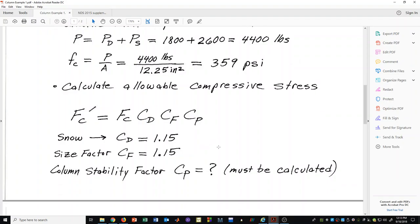In this case we just have three adjustment factors that we need to worry about. For snow we have a duration factor of 1.15. Already we have mentioned that for the size factor we have C sub F of 1.15. The last factor is the column stability factor and that is something that must be calculated.